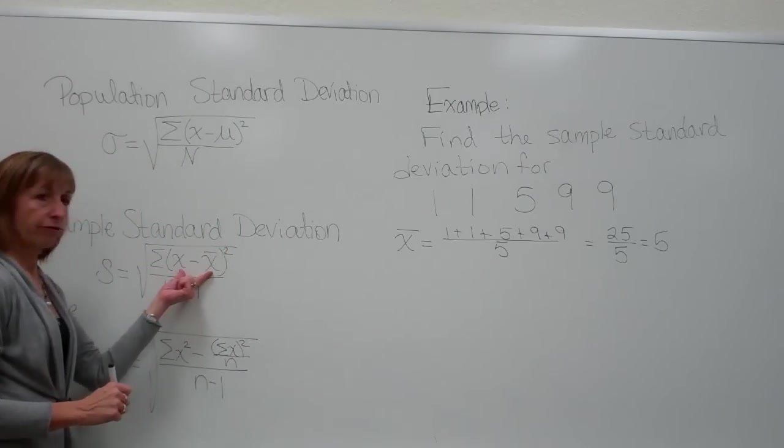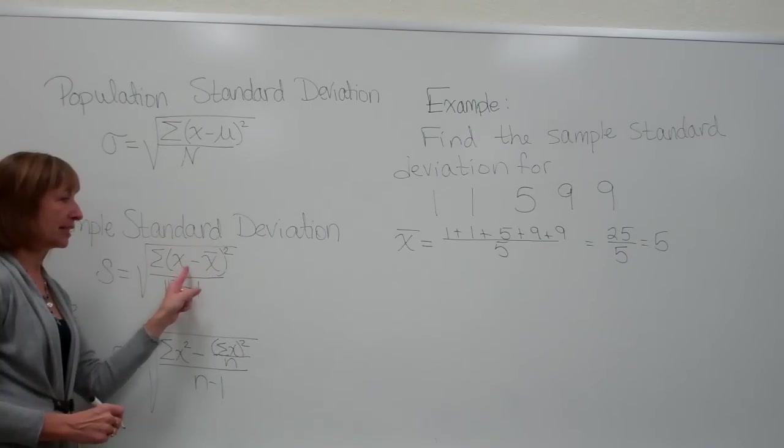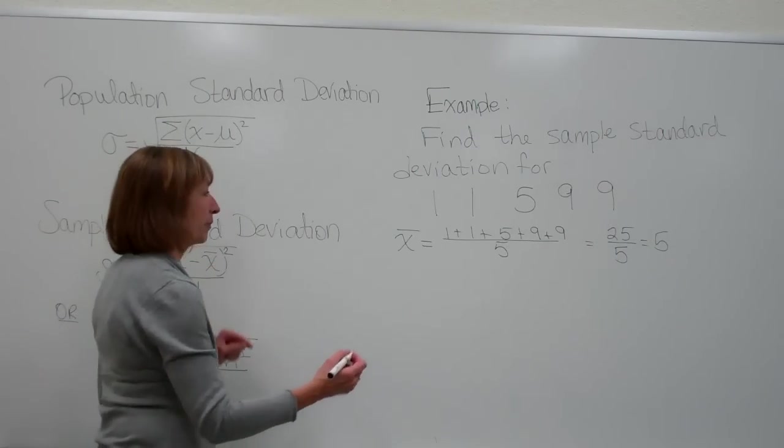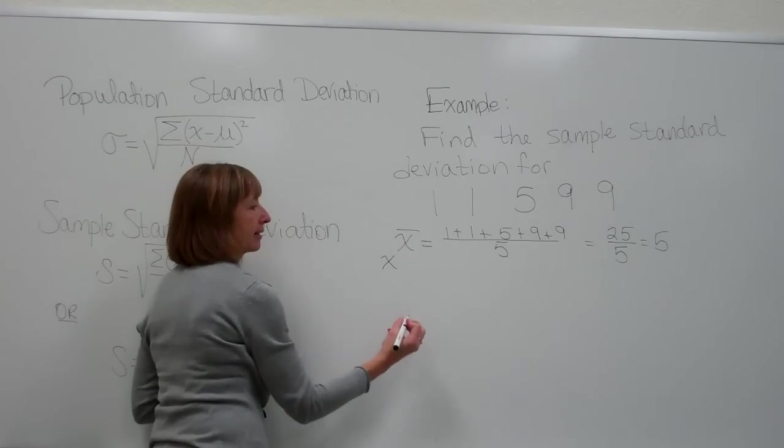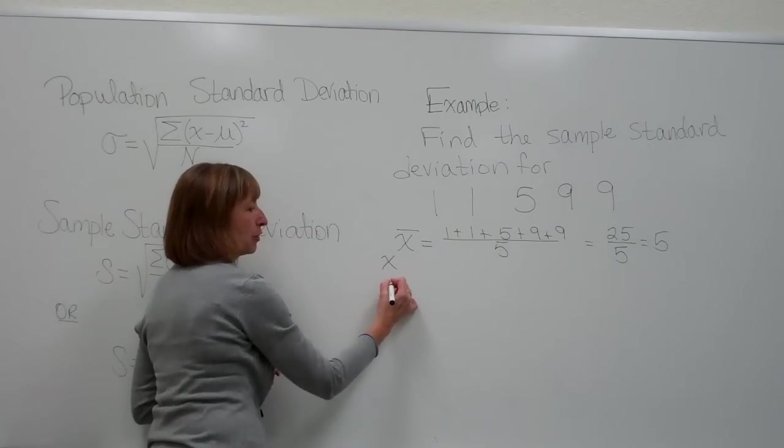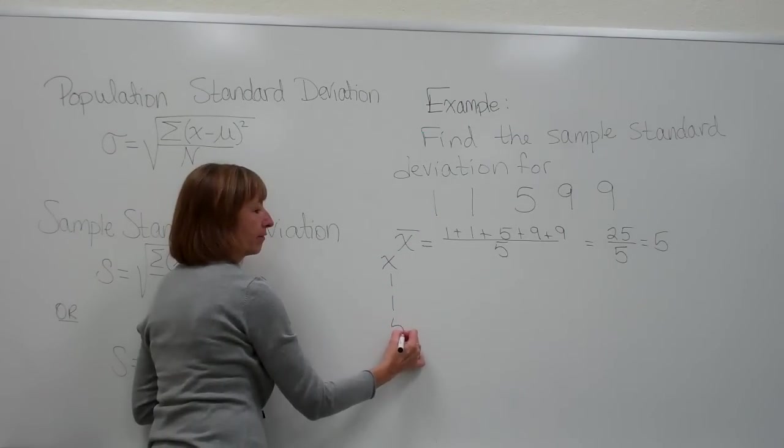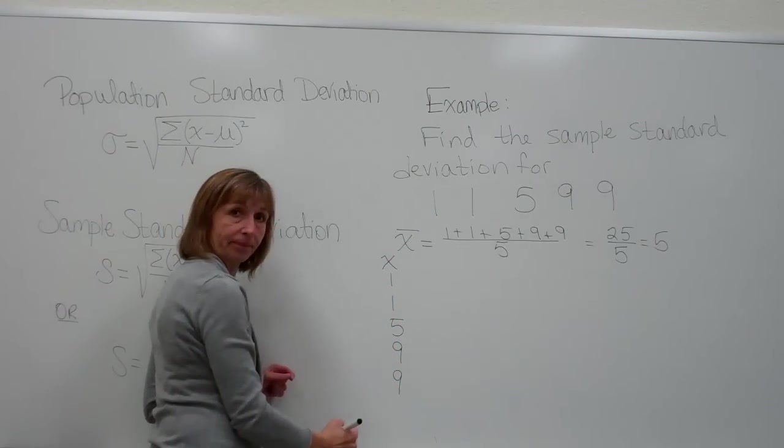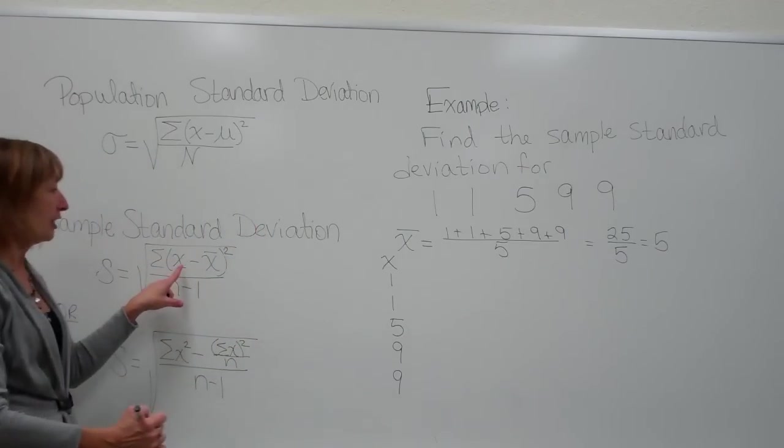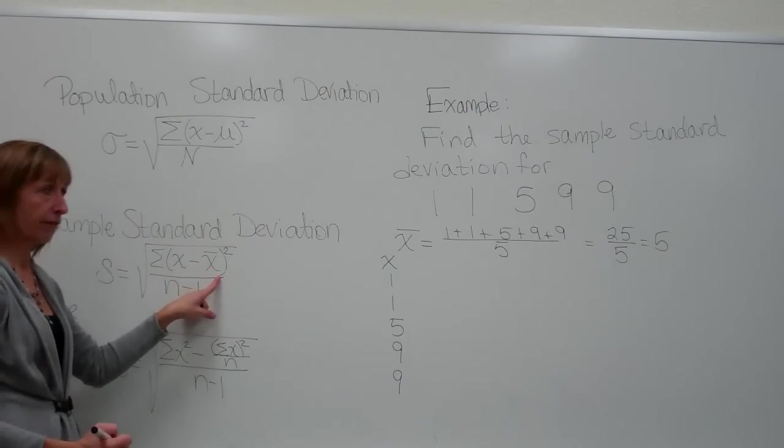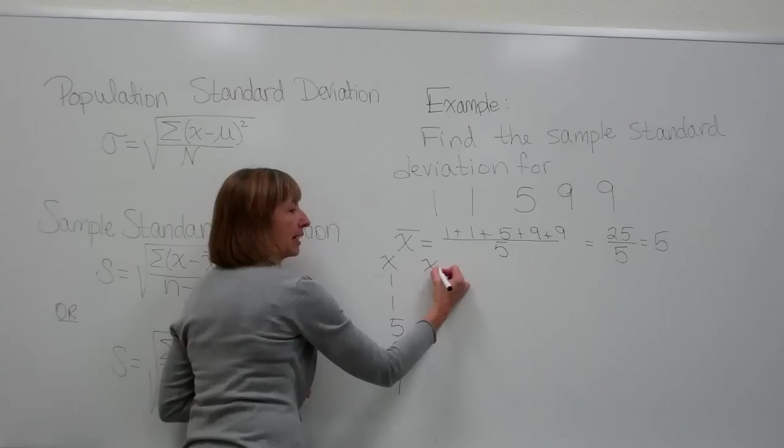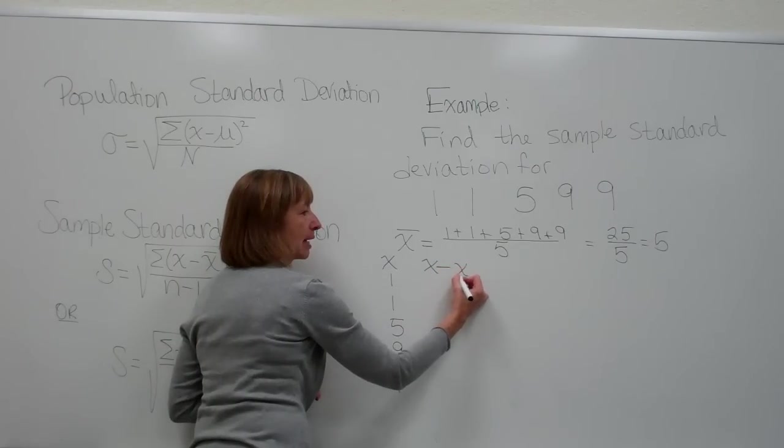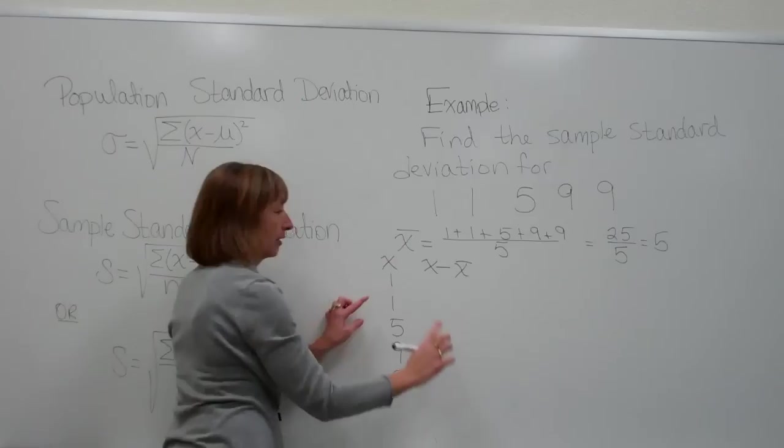Now we want to find the difference or the distance each value is away from the mean. So I'm going to make a column with my x's, and then just write in the numbers that you got for your data set. So I have 1, 1, 5, 9, 9. Now for each of these, I need to subtract off the mean. So I'll make another column heading showing that I'm taking the number in my first column, and subtracting from that the sample mean, which in this case is 5.